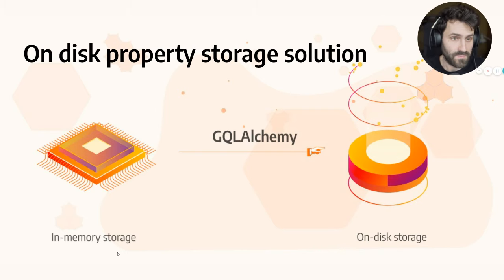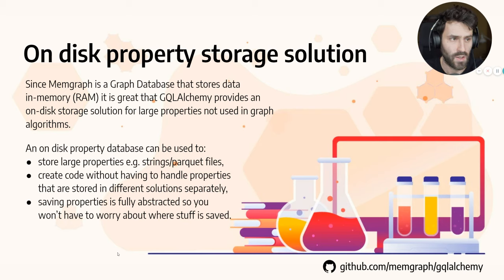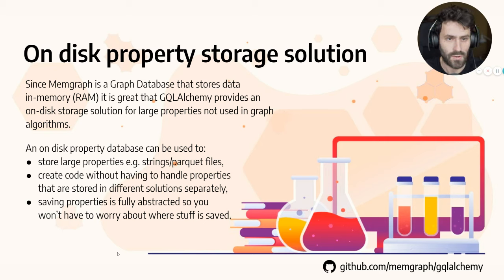One significant GQL Alchemy feature is the ability to store large properties on disk. Since Memgraph is a graph database that primarily stores data in main memory, GQL Alchemy provides a nice way to store large properties like strings or Parquet files on disk. All of this is fully abstracted, so you don't have to come up with an additional service or complex code to integrate that into Memgraph — it's all abstracted away.